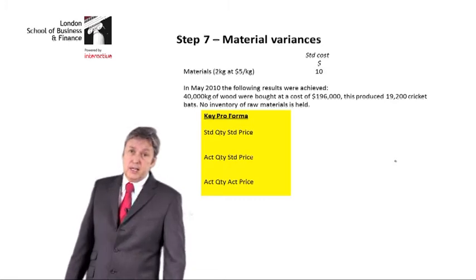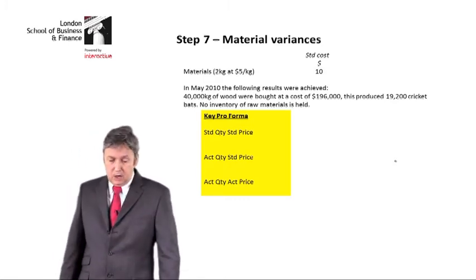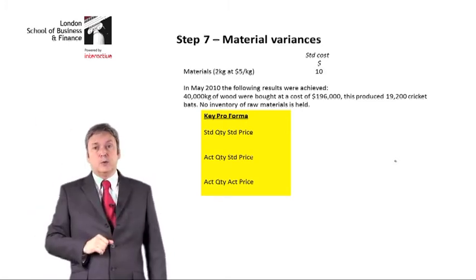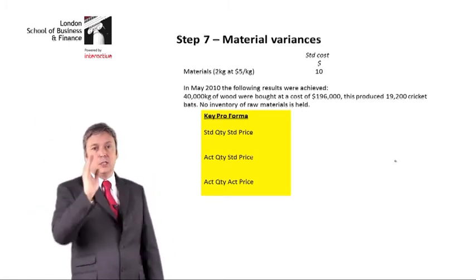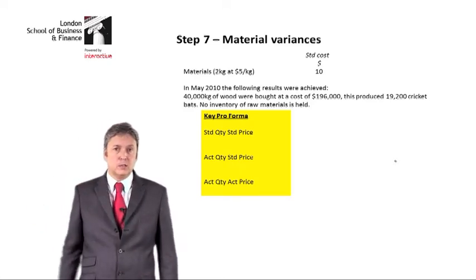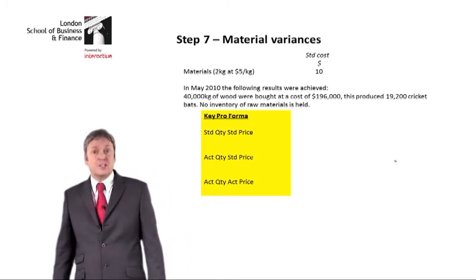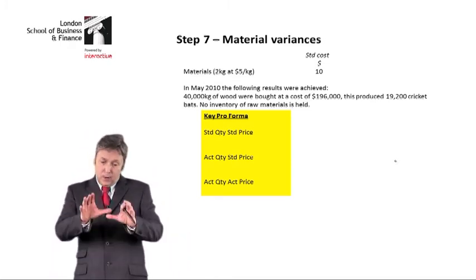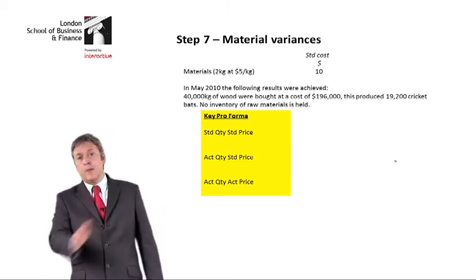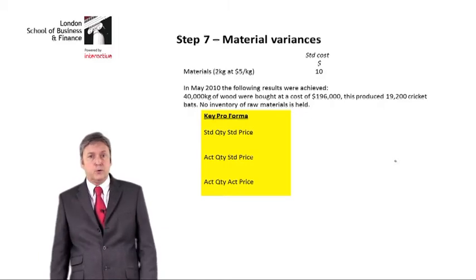This is what I use as a standard proforma. I've got my standard quantity, standard price, which I compare to my actual quantity, standard price, which I compare to my actual quantity, actual price. I use a proforma because I do not want to think. When it comes to variances, I want to make sure I can bang the numbers out without a thought passing through my brain.